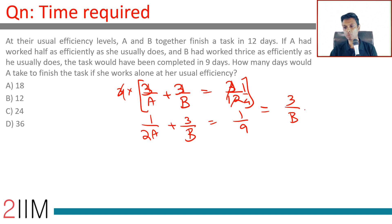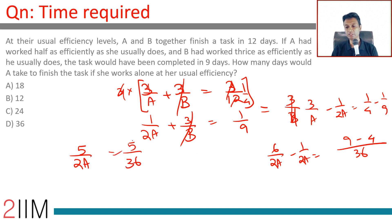Sorry, multiply by 3. 3/a minus 1/2a is 1/4 minus 1/9. This will disappear. 3/a minus 1/2a, that is 6/2a minus 1/2a, equals 9/36 minus 4/36, or 5/2a equals 5/36.